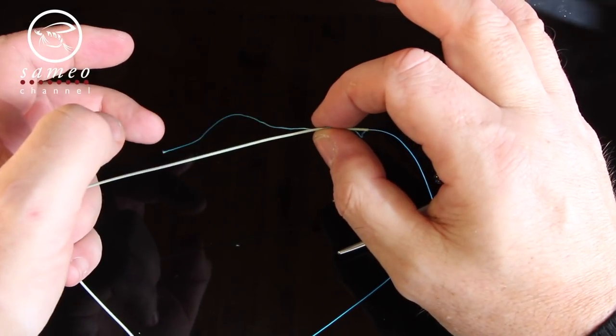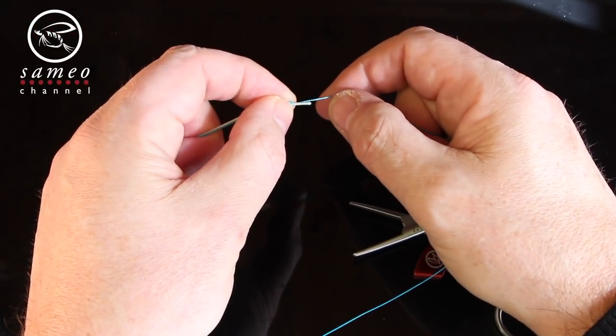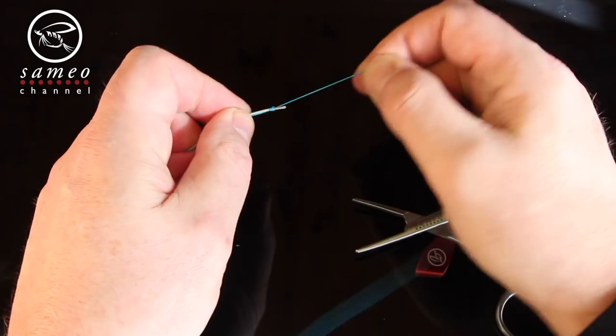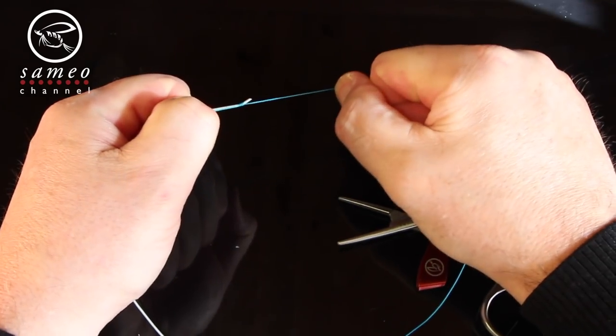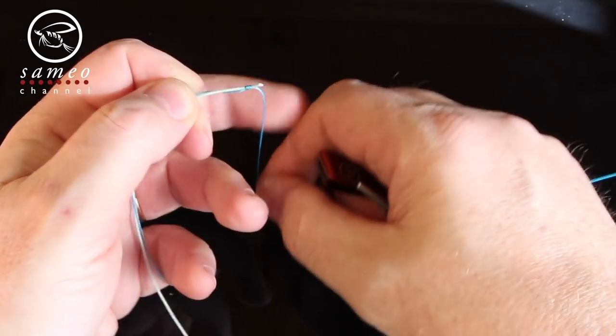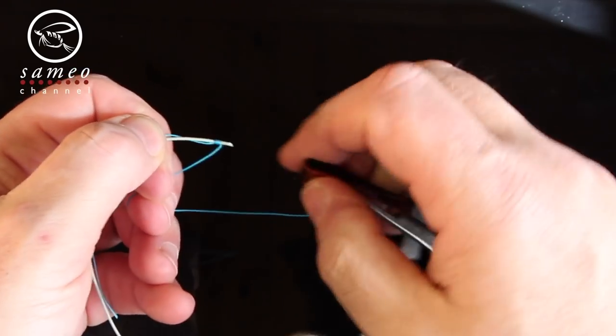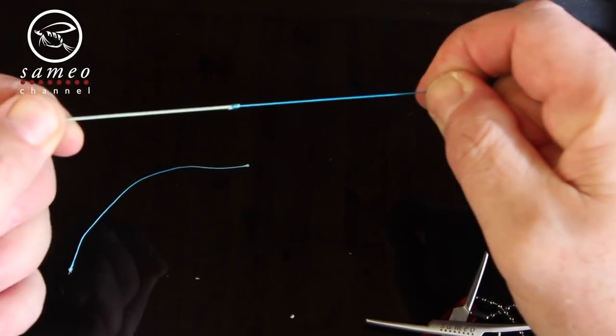Before you finally tighten it up completely, pull the knot close to the end of the fly line so you don't waste too much of it. Wet and tighten. Trim the excess. This makes for a very small and straight knot.